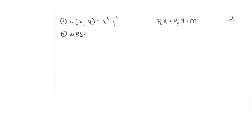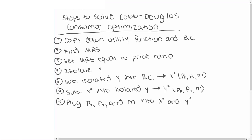In step two, we move into the real work of the problem, starting with finding our MRS. The marginal rate of substitution is the partial derivative of utility with respect to x, divided by the partial derivative with respect to y. The partial derivative with respect to x is 2x to the power of 1 times y to the fourth, and with respect to y is 4x squared times y to the third power. Simplifying, our MRS equals y divided by 2x.